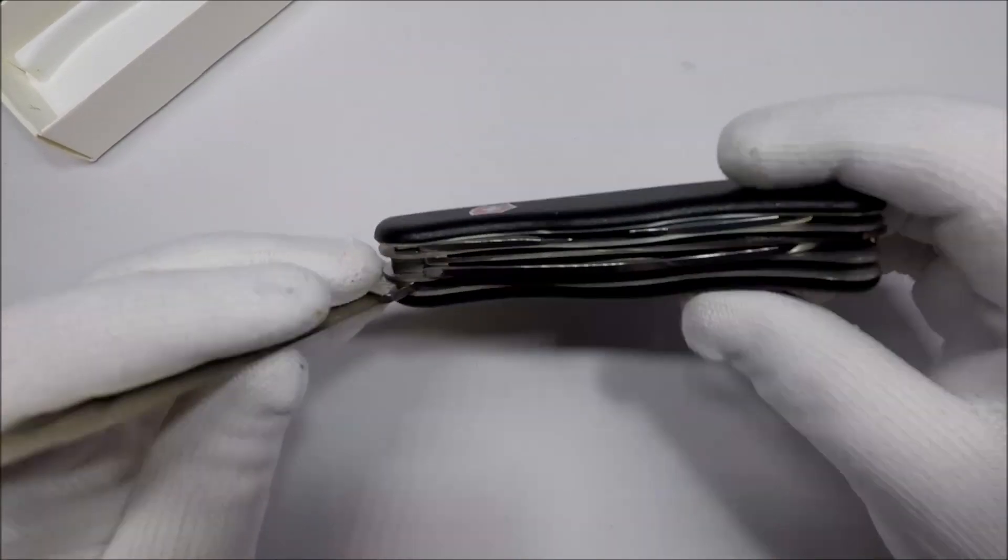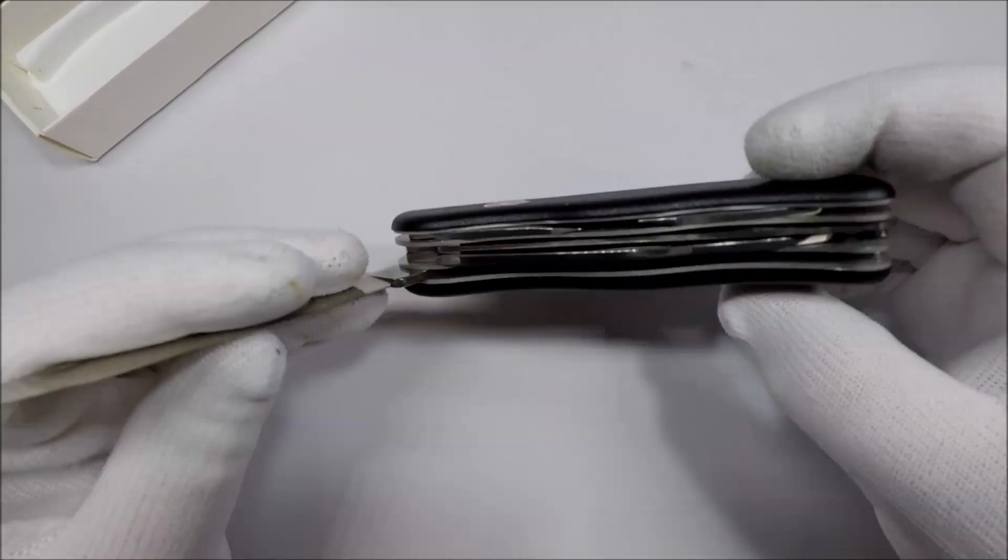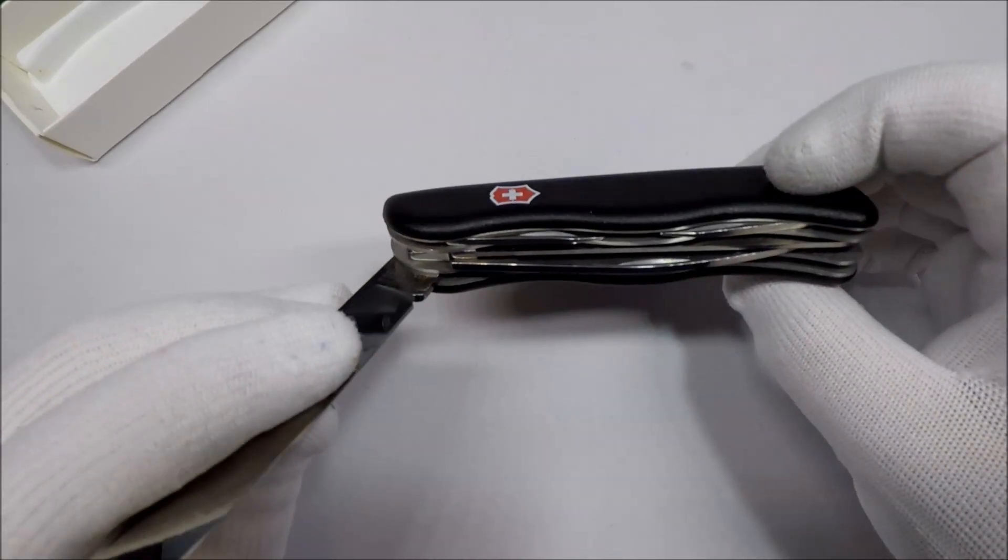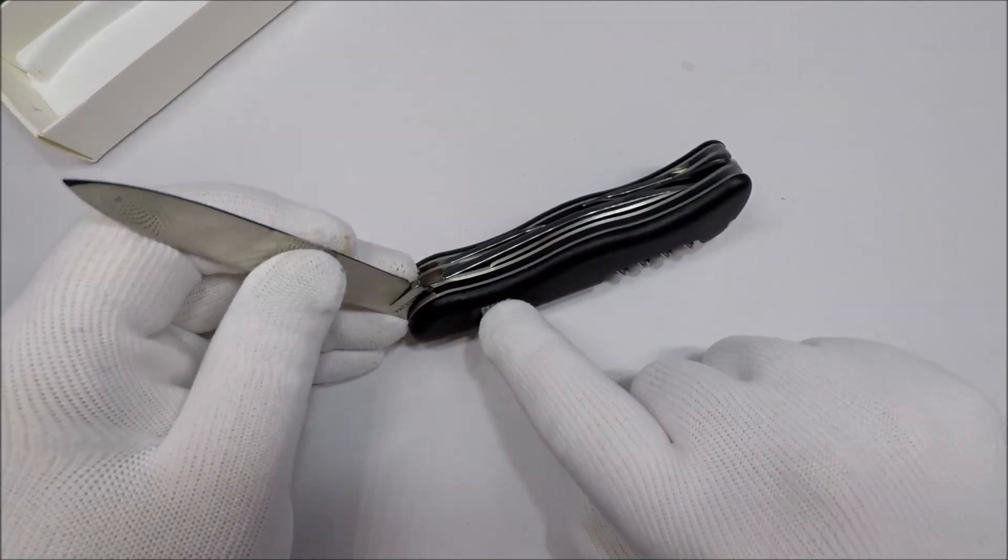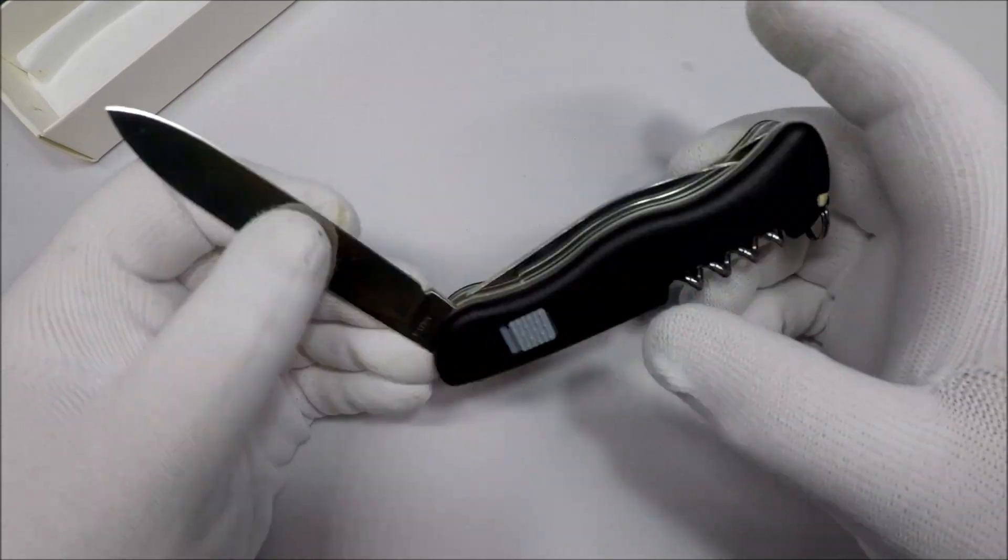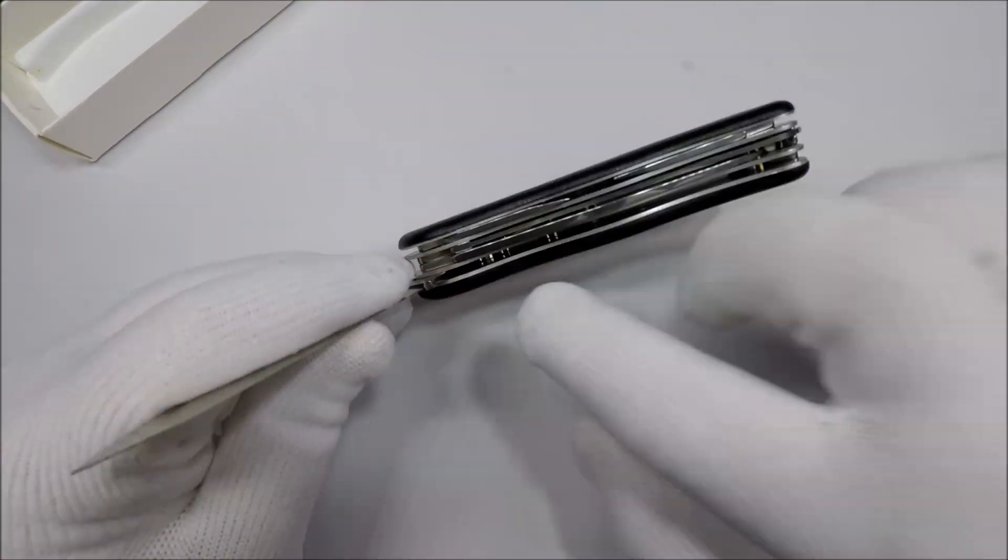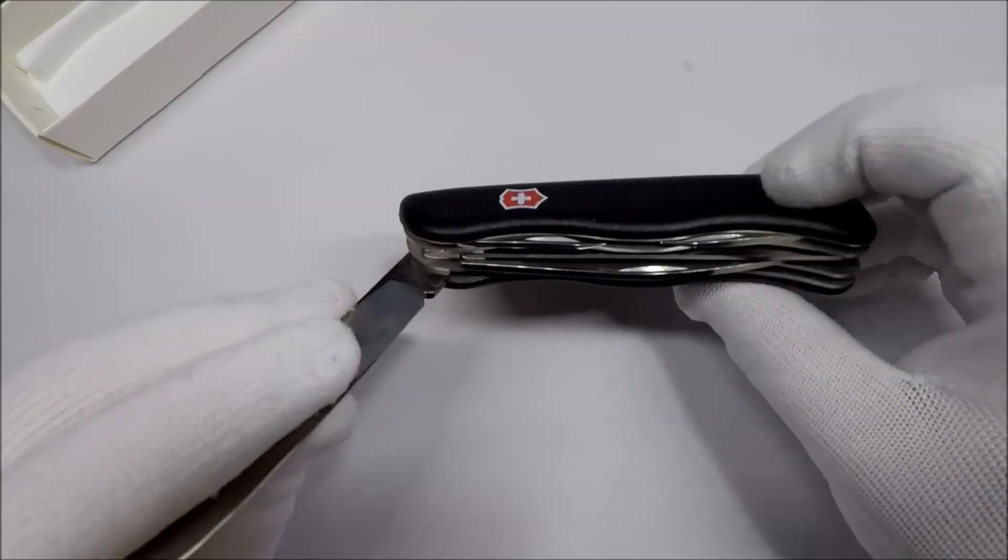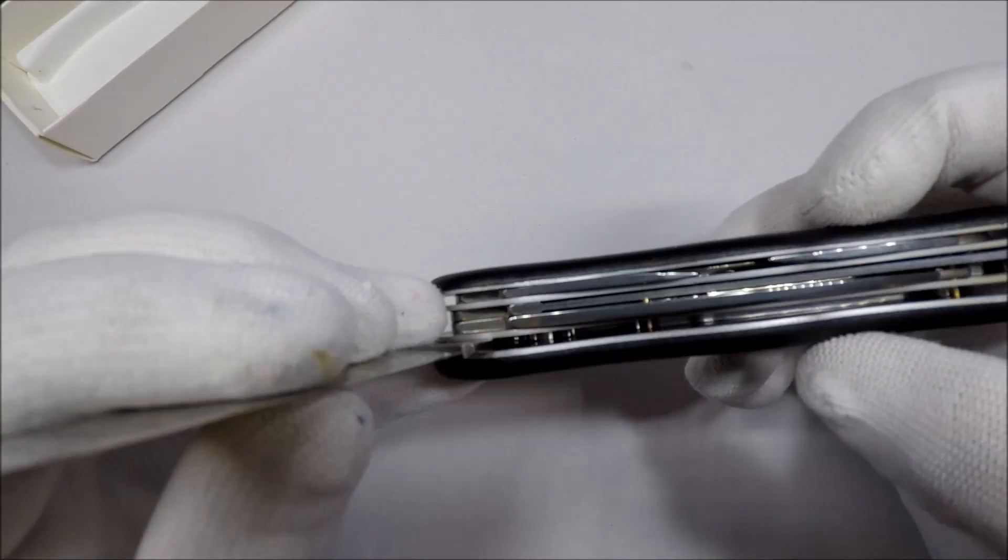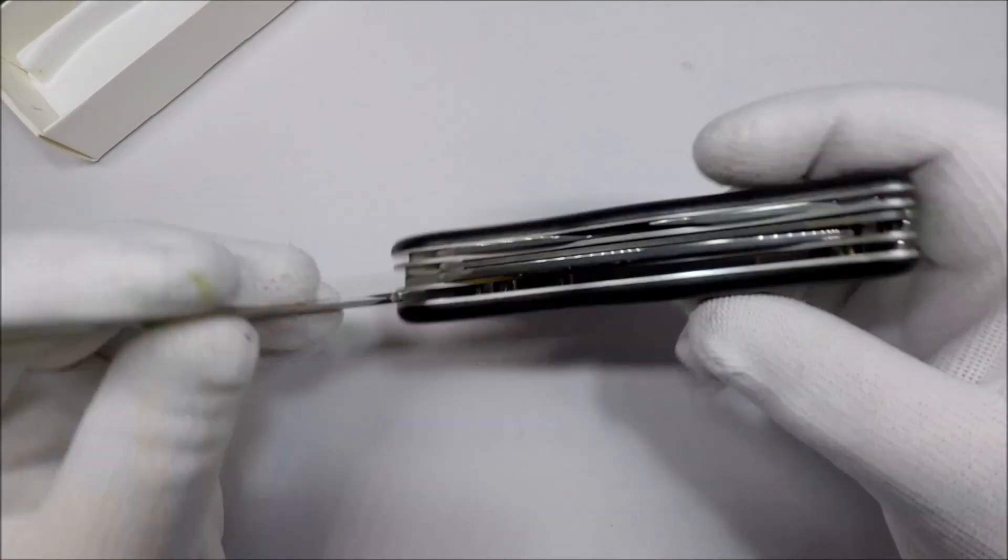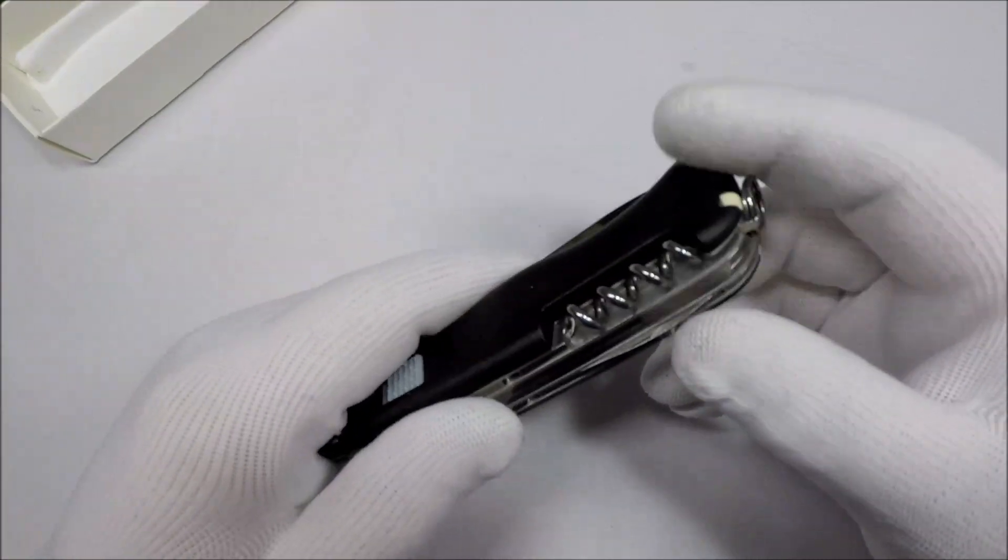Cause I looked at one of these recently, I looked at another 111 millimeter, and what it did is, this little, the little scale tool, the little lever on the scale depressed a liner lock, and I was assuming this was the same way, but it is not apparently. That's interesting.